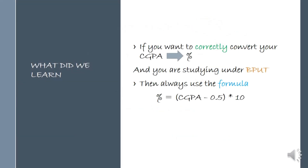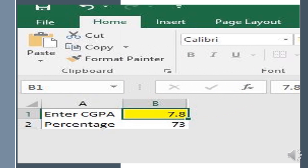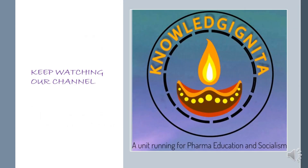So what did we learn? If you want to correctly convert your CGPA to percentage and you are a student under BPUT, the formula is: percentage equals (CGPA minus 0.5) multiplied by 10. We have also provided a calculator — check the description section for its link. Put your CGPA in the yellow field and it will automatically calculate your percentage. Keep watching our channel, thank you.